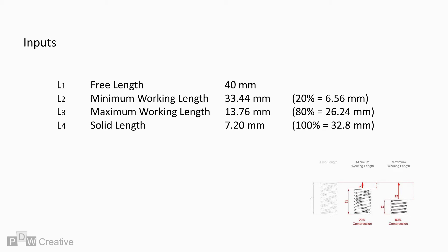The lengths make more sense if we overlay deflection. The minimum working length works out at 6.56 mm deflection. The max working length works out at 26.24 mm deflection, and the solid length works out at 32.8 mm deflection. All are in line with the 20, 80, and 100% rule.